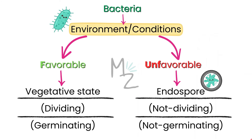When spores are formed: we all have an environment around us — a surrounding that has food, air, and certain conditions suitable for us to live. The same goes for bacteria. If the environmental conditions are favorable to bacterial growth and survival, bacteria will be in their vegetative state, dividing and germinating. When the environment is unfavorable, bacteria will be converted into an endospore. It will not be dividing or germinating — it will remain in that state until conditions are favorable.